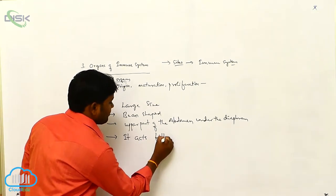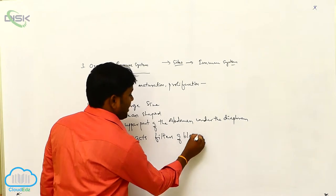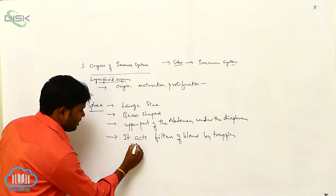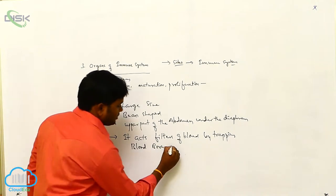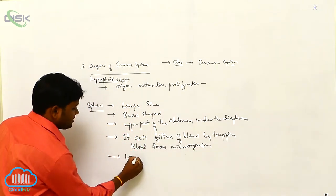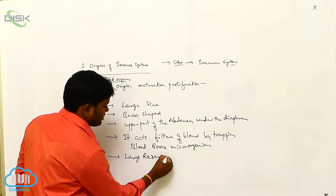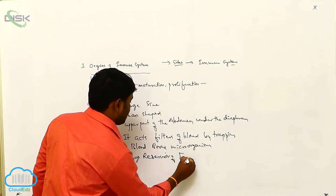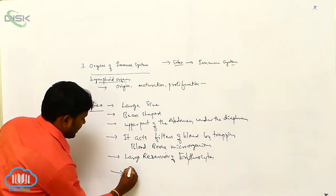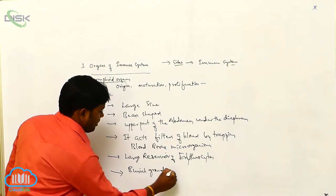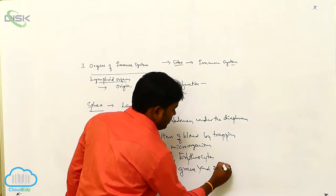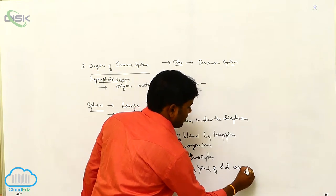It acts as the filter of blood by trapping the blood-borne microorganisms, and it acts as a large reservoir of erythrocytes. It also acts as a burial ground and graveyard of the old worn-out erythrocytes.